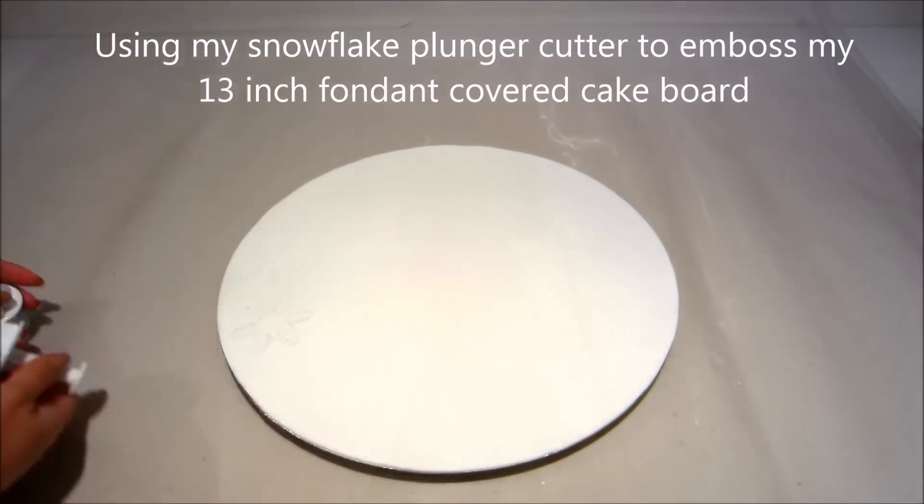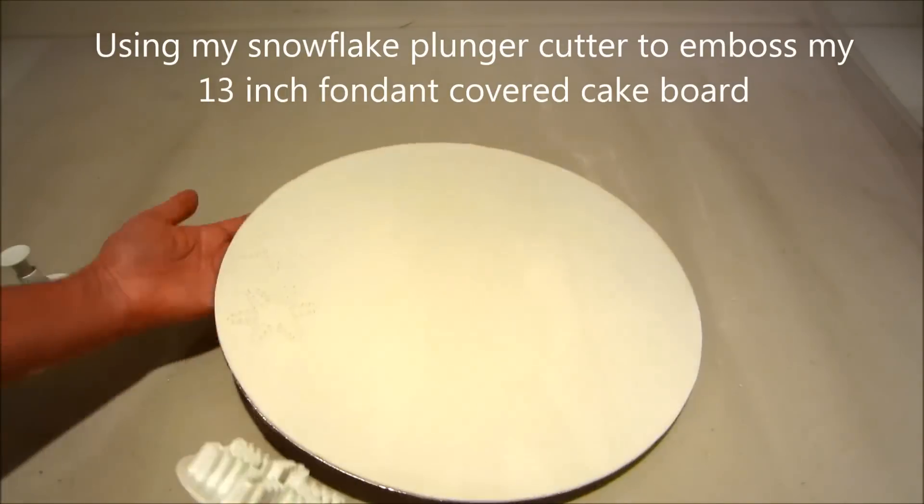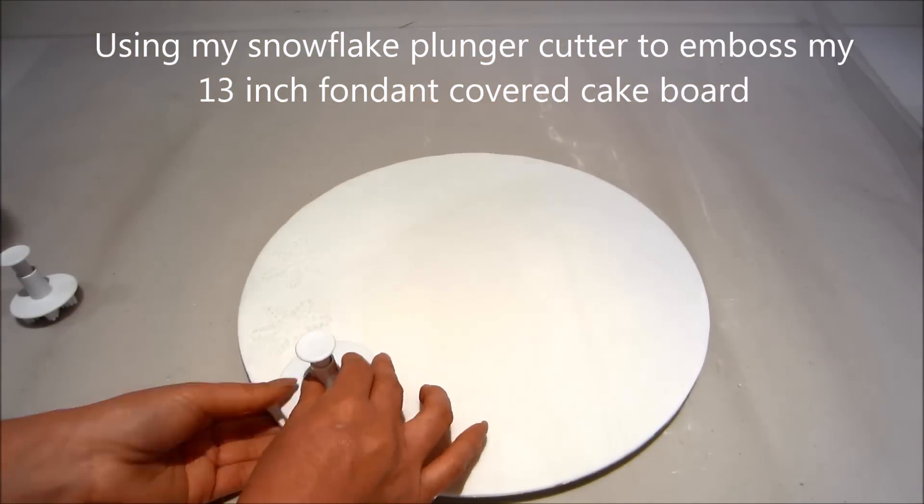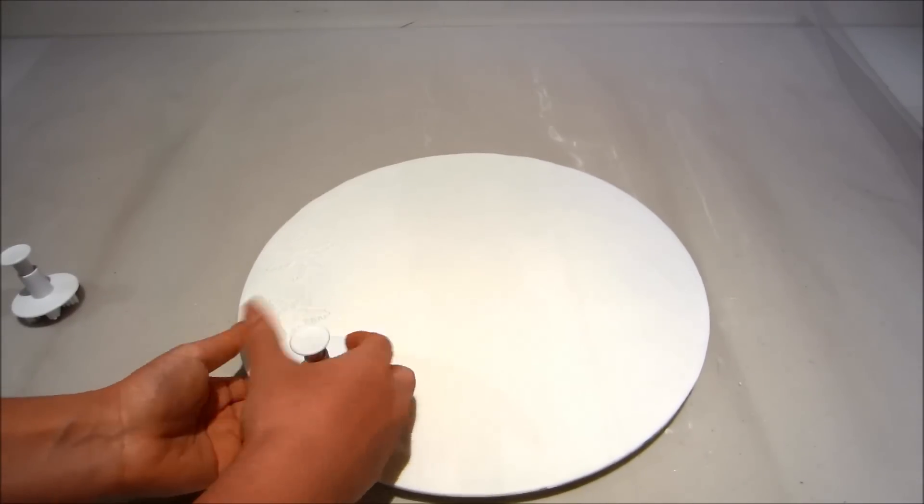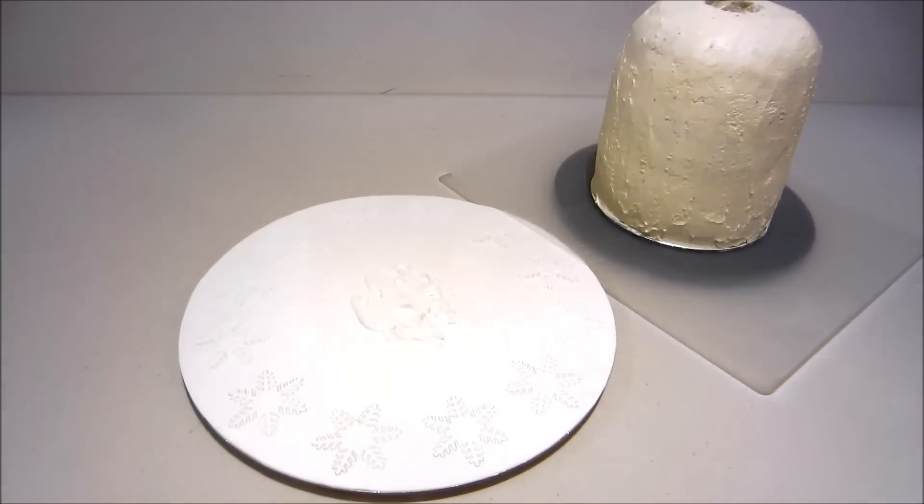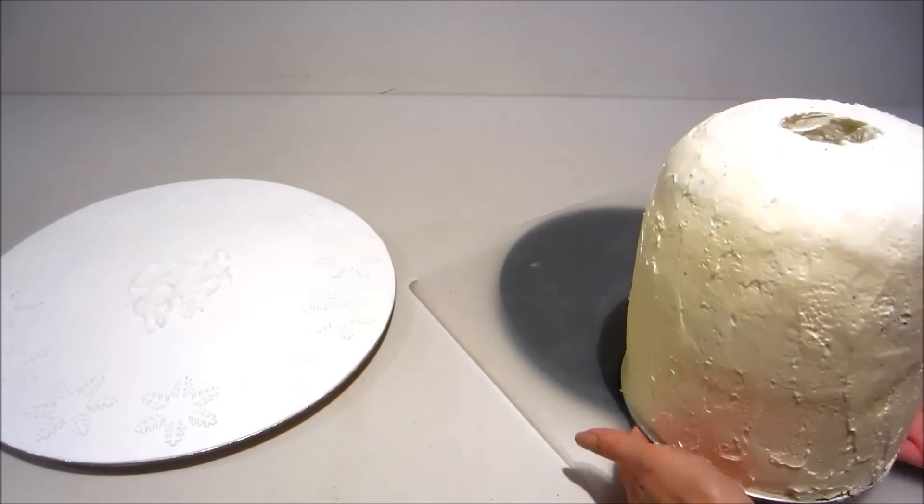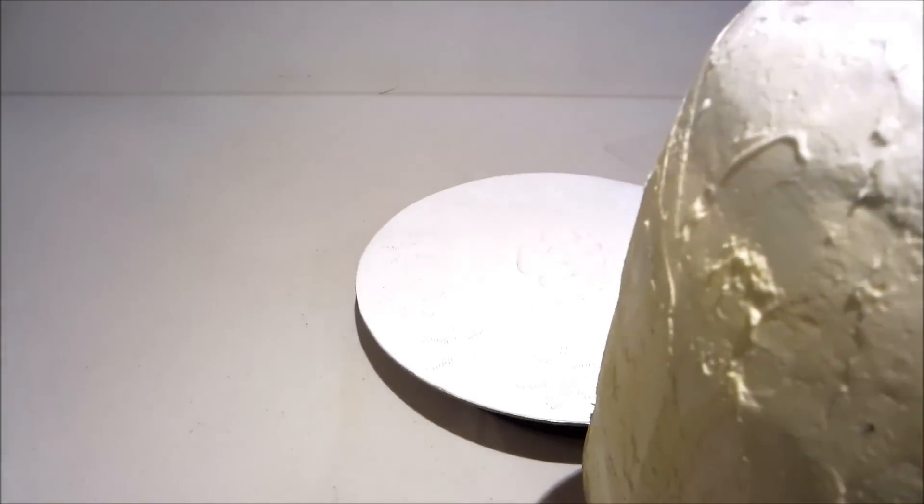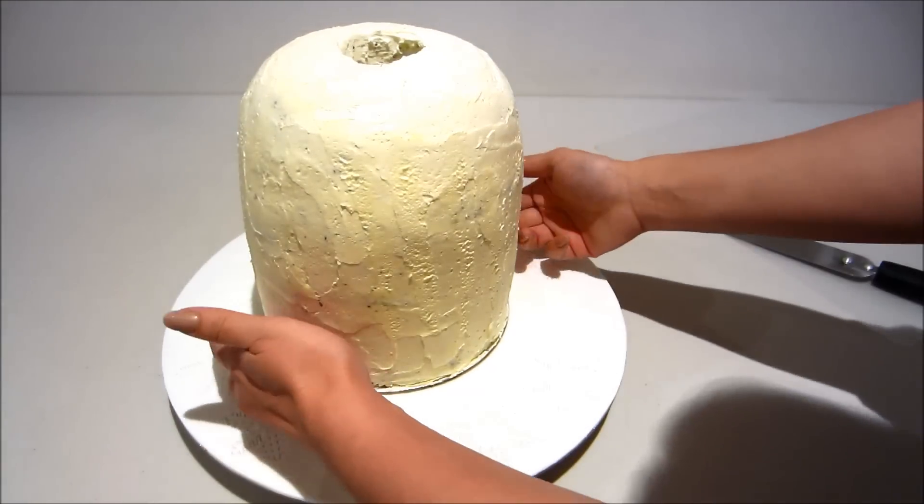Okay now here I'm showing you how I emboss my cake board. You can see how to cover a cake board in the tutorial at the end of this video. Now I'm using a little bit of royal icing and lifting up my cake and attaching it onto the cake board.